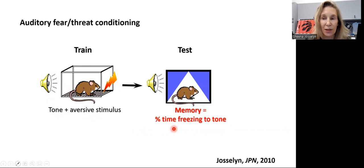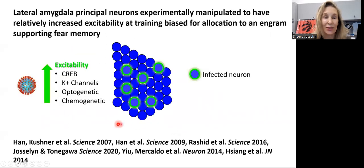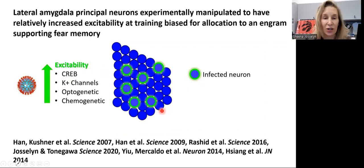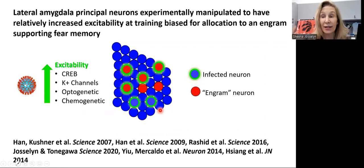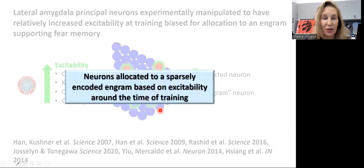In a series of experiments conducted over many years, we looked at how this auditory fear memory is represented in the lateral amygdala. We have a bunch of neurons in the lateral amygdala, and we used viral vectors each expressing different constructs over the years. The common denominator is that they all increase the excitability of these randomly infected neurons. These neurons that are infected have increased levels of excitability relative to their neighbors. We found that neurons with increased excitability right before training ended up becoming engram neurons — neurons that are really important in storing this memory. These correlational data suggest that neurons are allocated to a sparsely encoded engram based on excitability at the time of training.